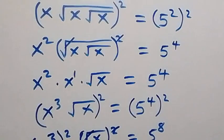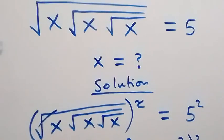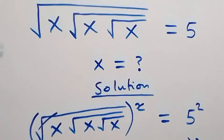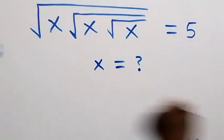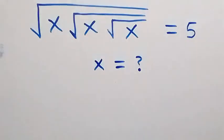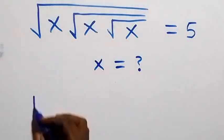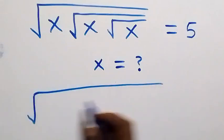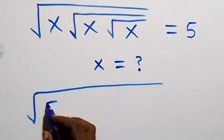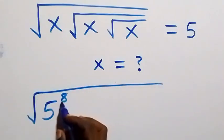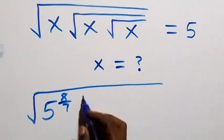Now let's check to verify if this satisfies the given problem. From what we have, let's substitute the value of x, which is 5 raised to power 8 over 7. This becomes square root of 5 raised to power 8 over 7, plus x, then also we have square root of 5 raised to power 8 over 7.